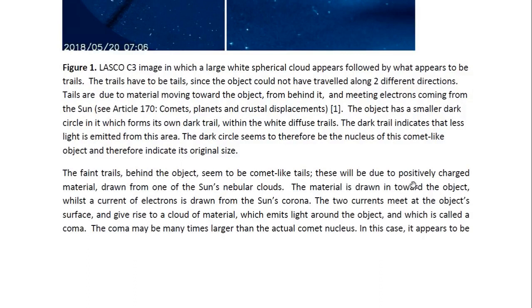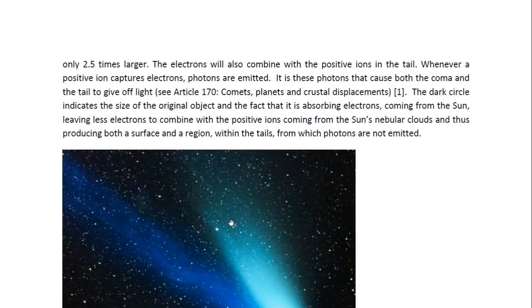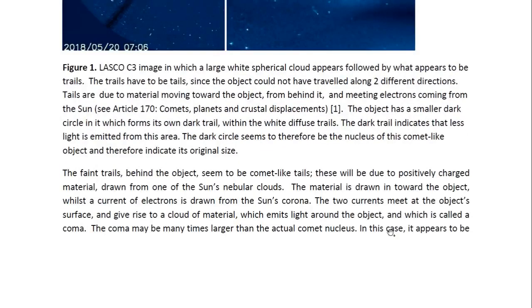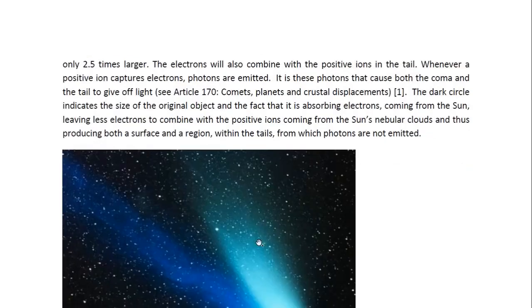These will be due to positively charged material drawn from one of the sun's nebula clouds. The material is drawn in towards the object, whilst the current of electrons is drawn from the sun's corona. The two currents meet at the object's surface and give rise to a cloud of material which emits light around the object, which is called a coma. The coma may be many times larger than the actual comet nucleus. In this case, it appears to be only 2.5 times larger.